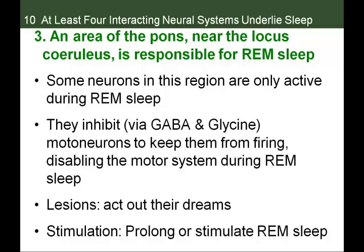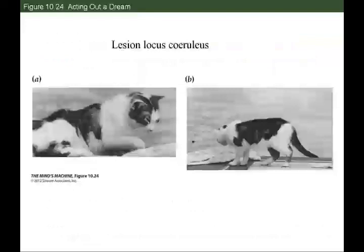People who sleepwalk or act out their dreams may have a problem with this pontine inhibitory system. Lesions in that area cause animals to act out their dreams — as demonstrated in cats in experiments. The brain stem, specifically the pons, sends inhibitory messages to the motor cortex to quiet it during REM sleep so the person is not compelled to physically act out their dreams.